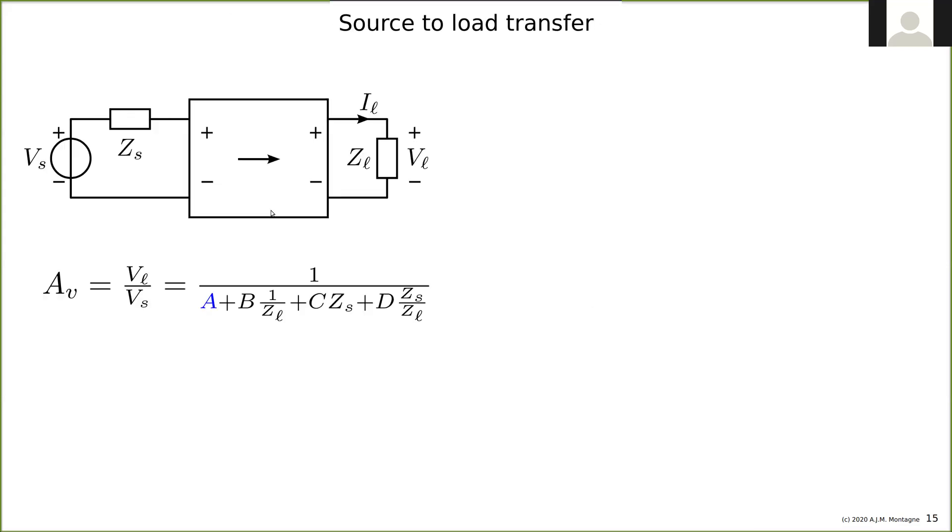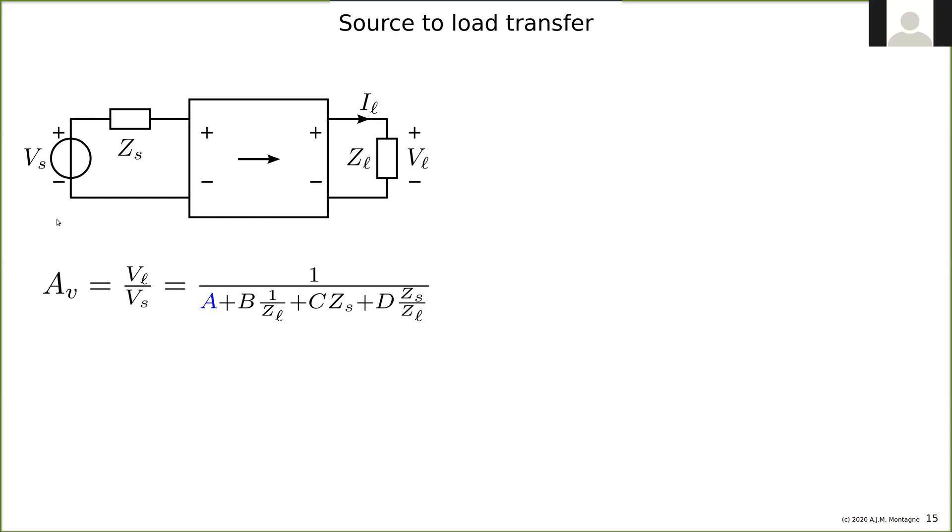If I want to have a transfer from source to load that does not depend on the source impedance and on the load impedance, I must give A a finite value and B, C, and D zero. That's a design conclusion.